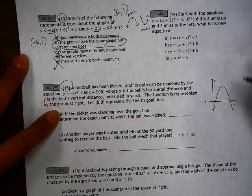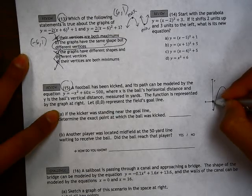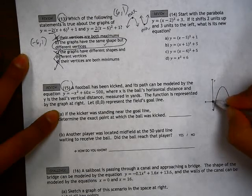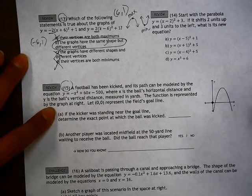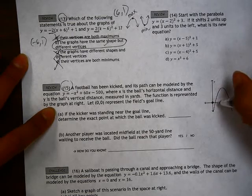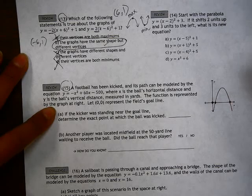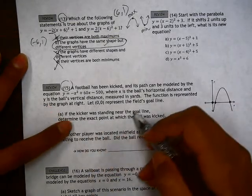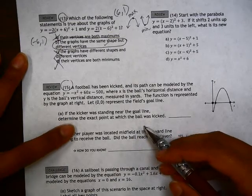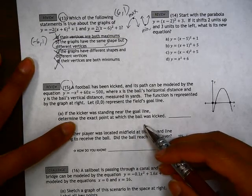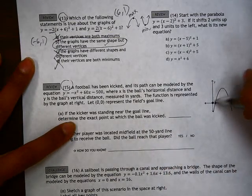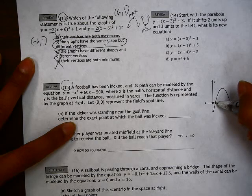We're going to say that (0,0) is the goal line, and the ball has been kicked starting at this point, landing at this point. The first question is saying that the kicker was standing near the goal line, determine the exact point at which the ball was kicked. So if this is the goal line, the kicker was standing here and he kicked the ball, we're trying to figure out where that's at.